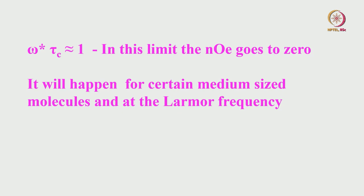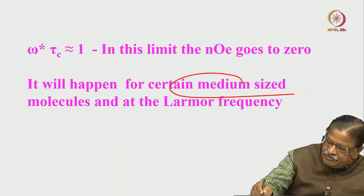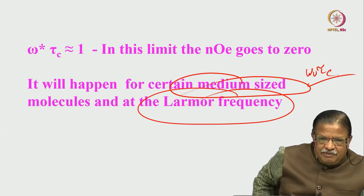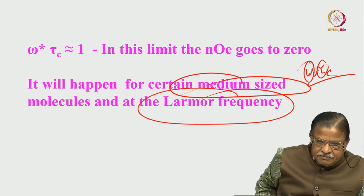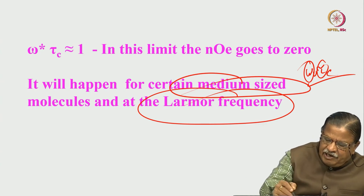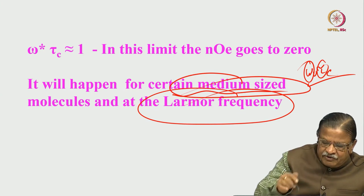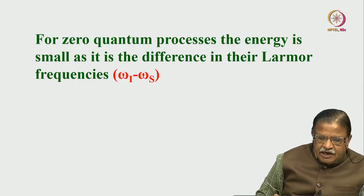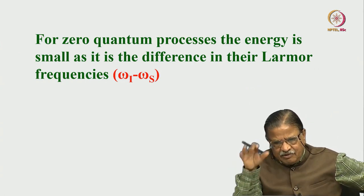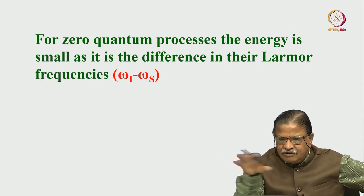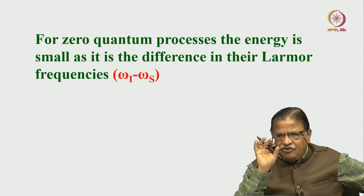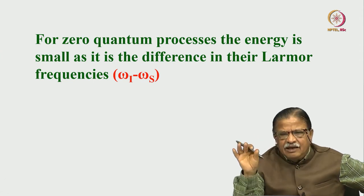When ω₀τ_c ≈ 1, the NOE goes to zero. This happens for certain medium-sized molecules at certain Larmor frequencies — either the molecular size or the field can be different, but their product ω₀τ_c must equal approximately 1. In that case, NOE will not be seen. So: extreme narrowing (ω₀τ_c << 1) gives positive NOE for small molecules in non-viscous solvents; the diffusion limit (ω₀τ_c >> 1) gives negative NOE for macromolecules.